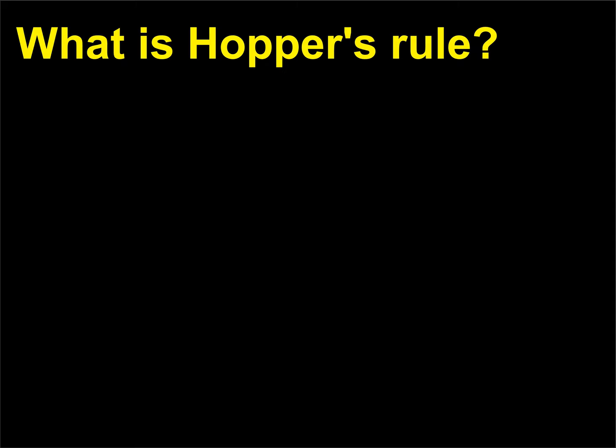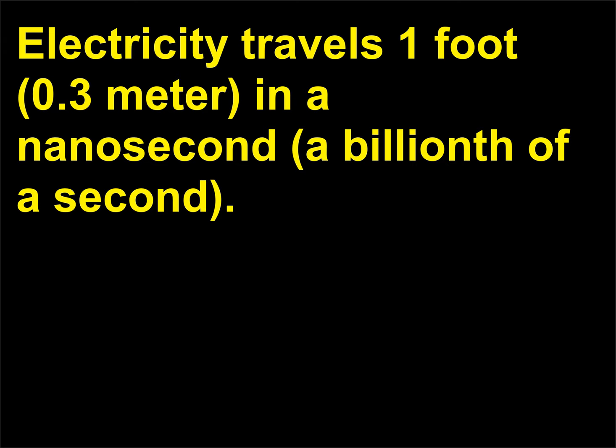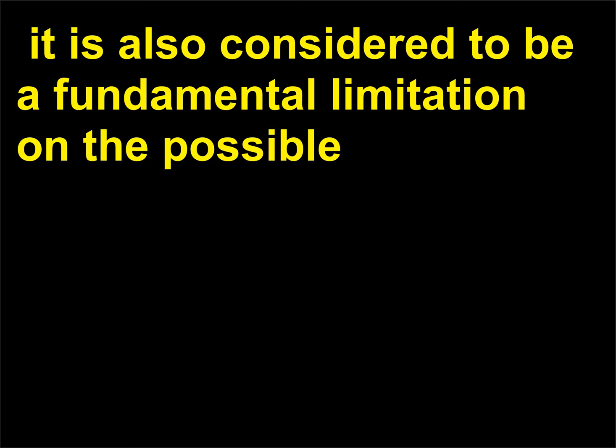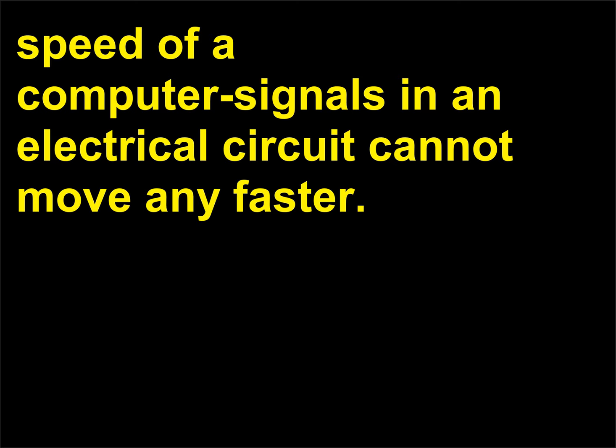What is Hopper's rule? Electricity travels 1 foot, 0.3 meter, in a nanosecond, a billionth of a second. This is one of a number of rules compiled for the convenience of computer programmers. It is also considered to be a fundamental limitation on the possible speed of a computer — signals in an electrical circuit cannot move any faster.